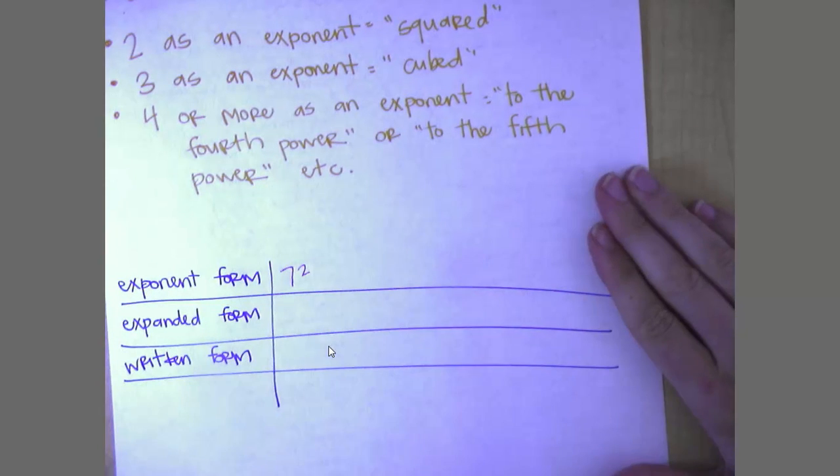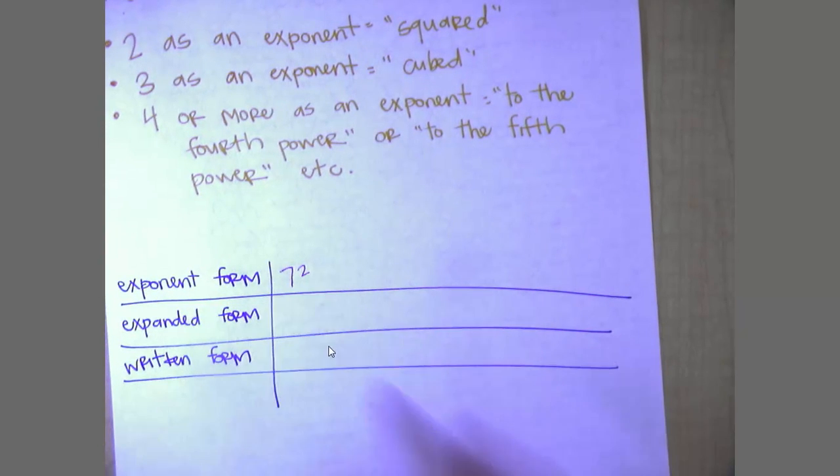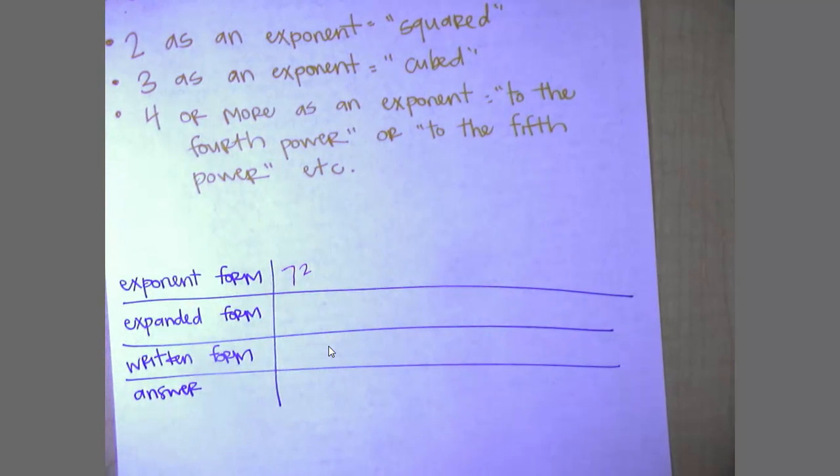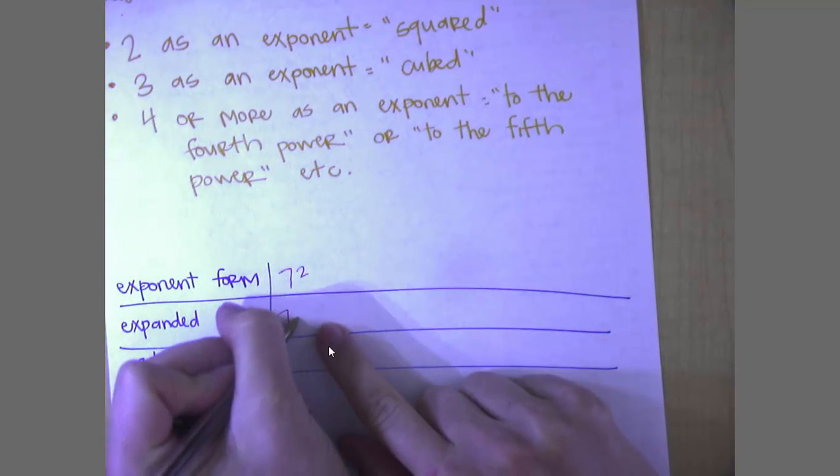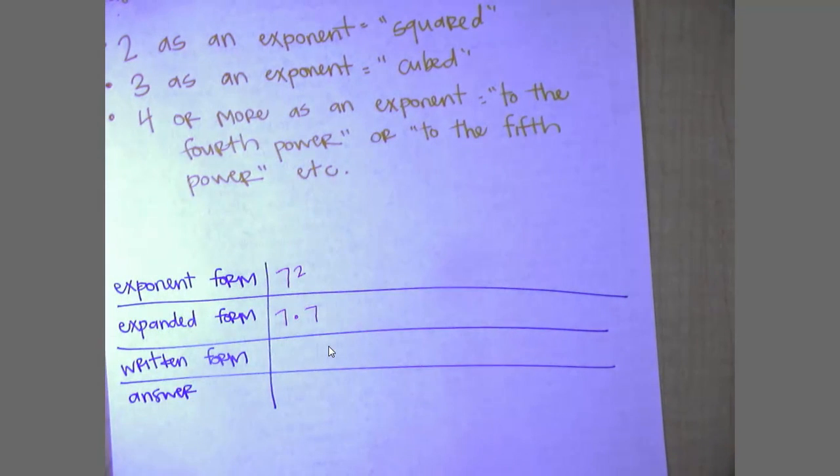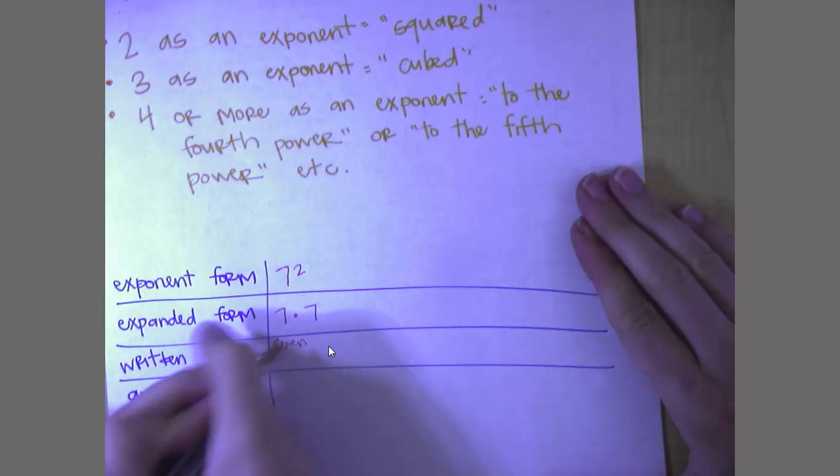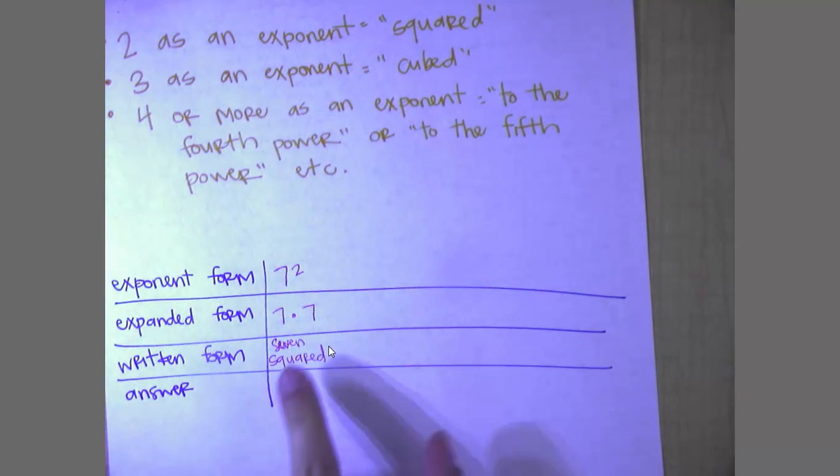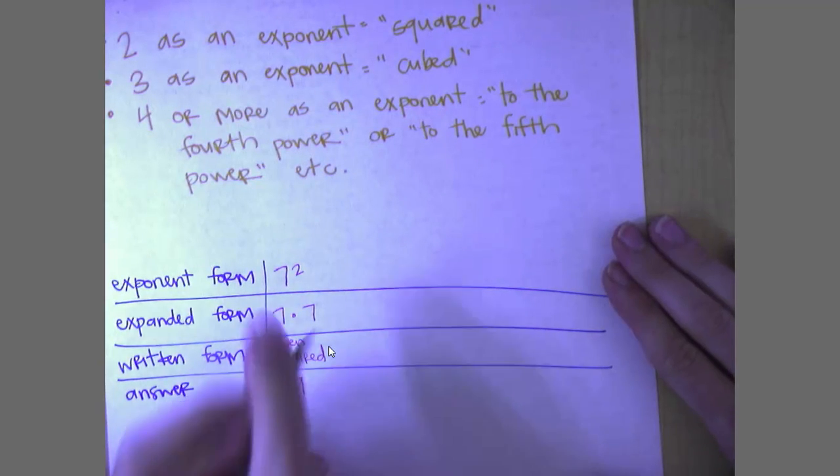So let's take a look at this one. If I gave you this right here. If I wanted to expand that, all I'm going to do is write a 7 twice. If I want to write it, I'm going to say 7 squared. And what is 7 times 7? 49. So my answer is 49.